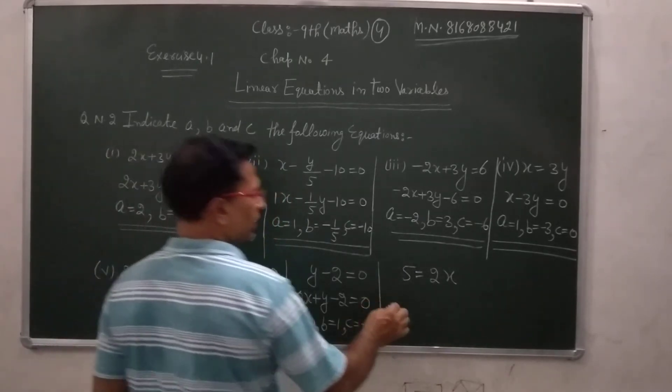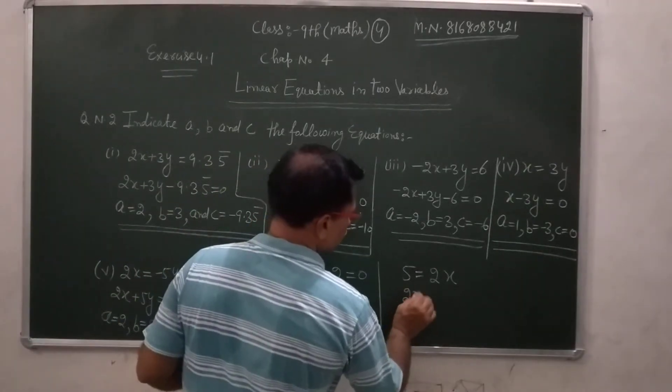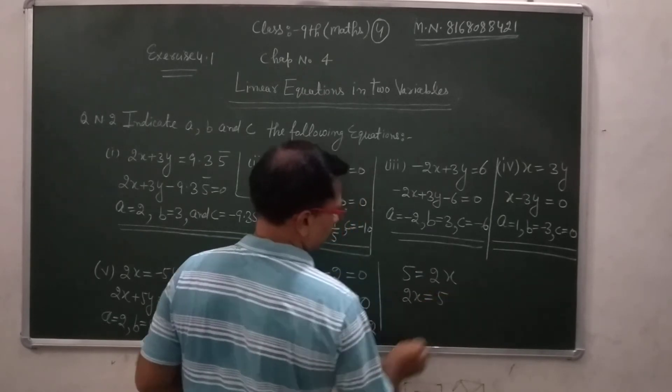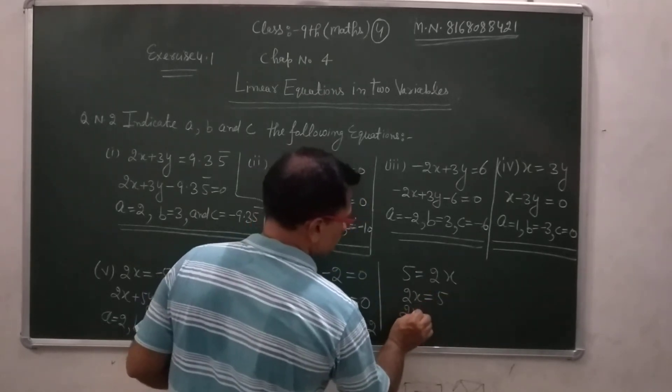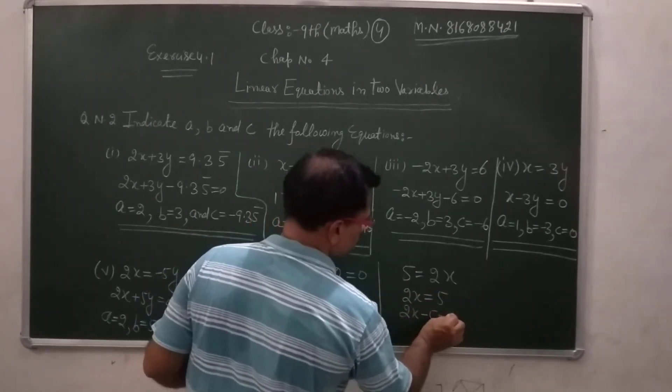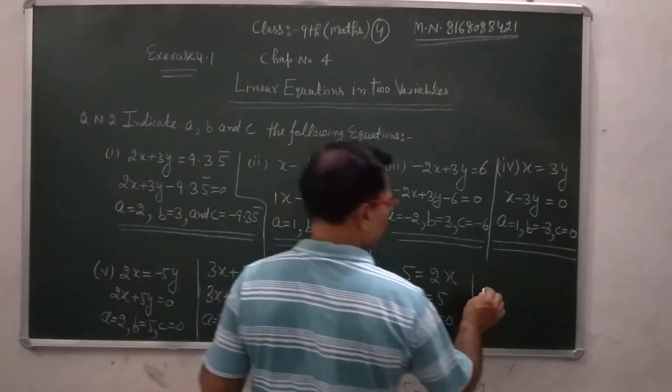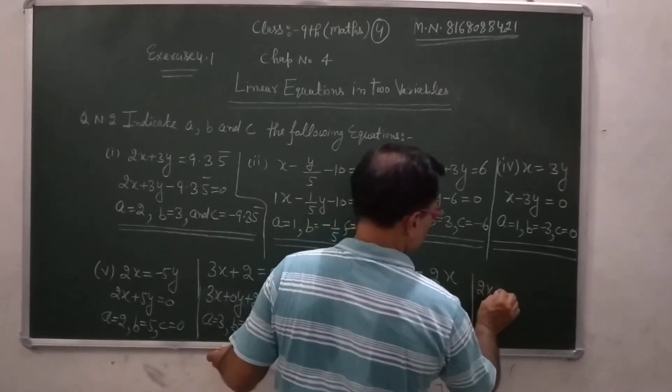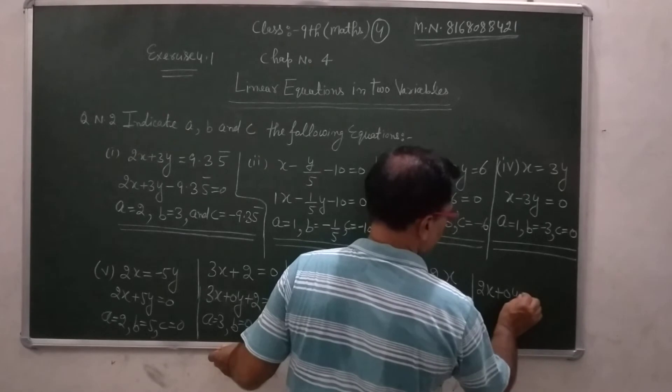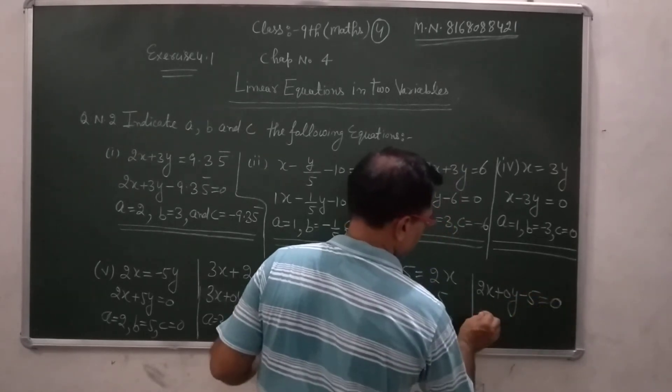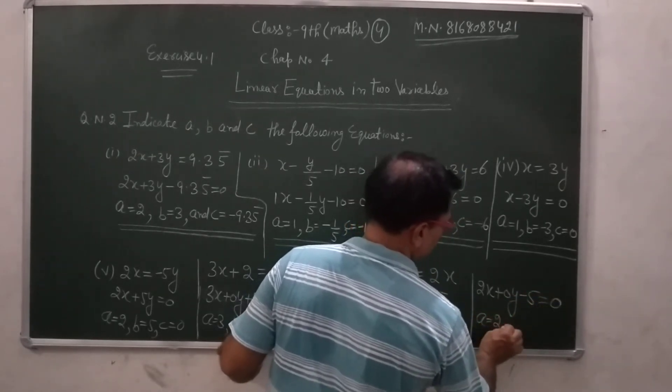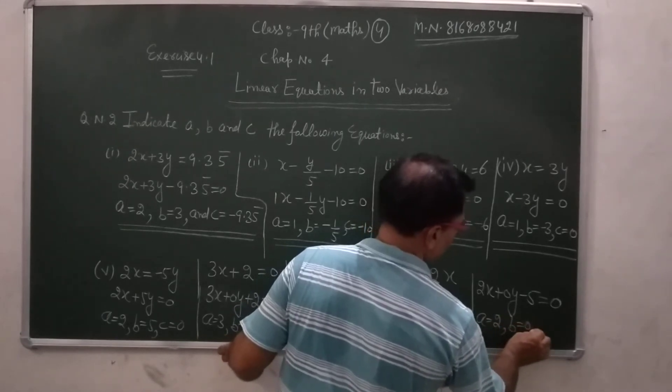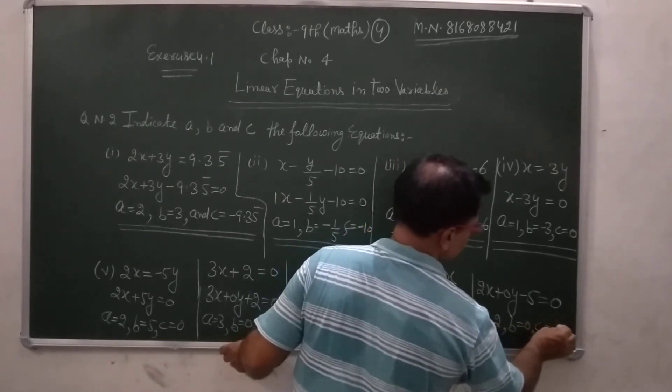This is equal to 2. A is equal to 2, B is equal to 0, C is equal to minus 5.